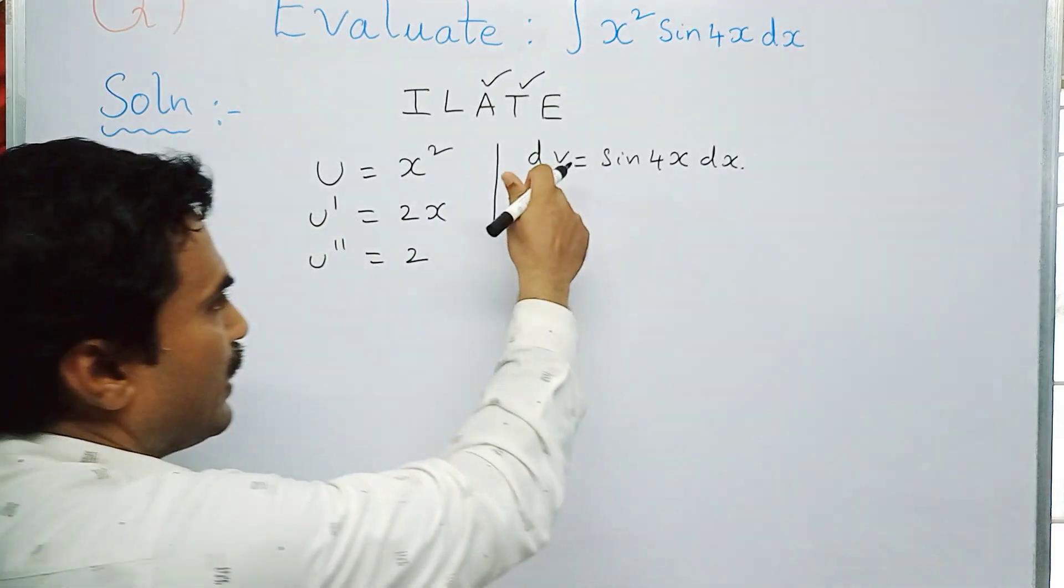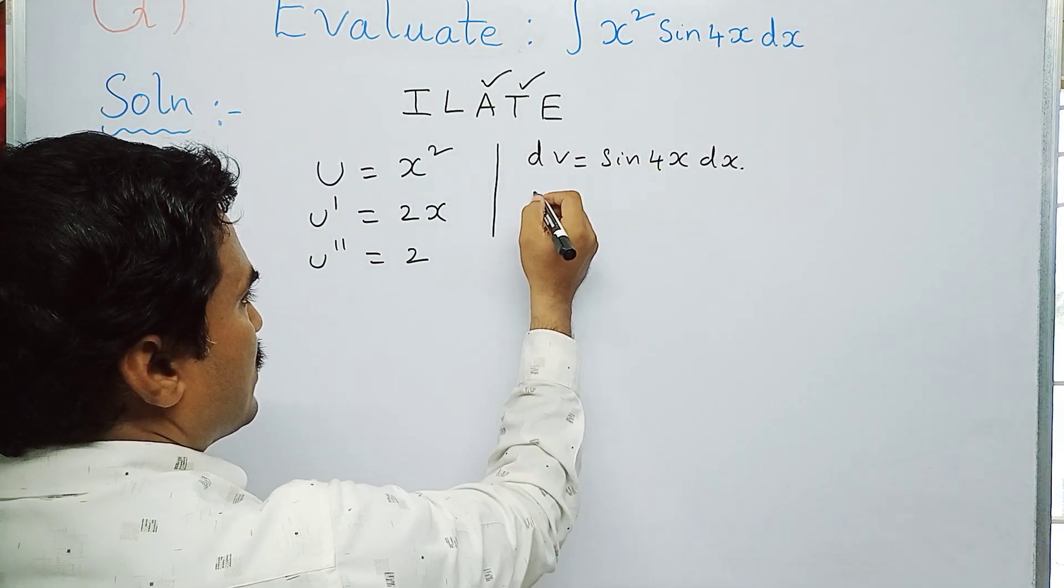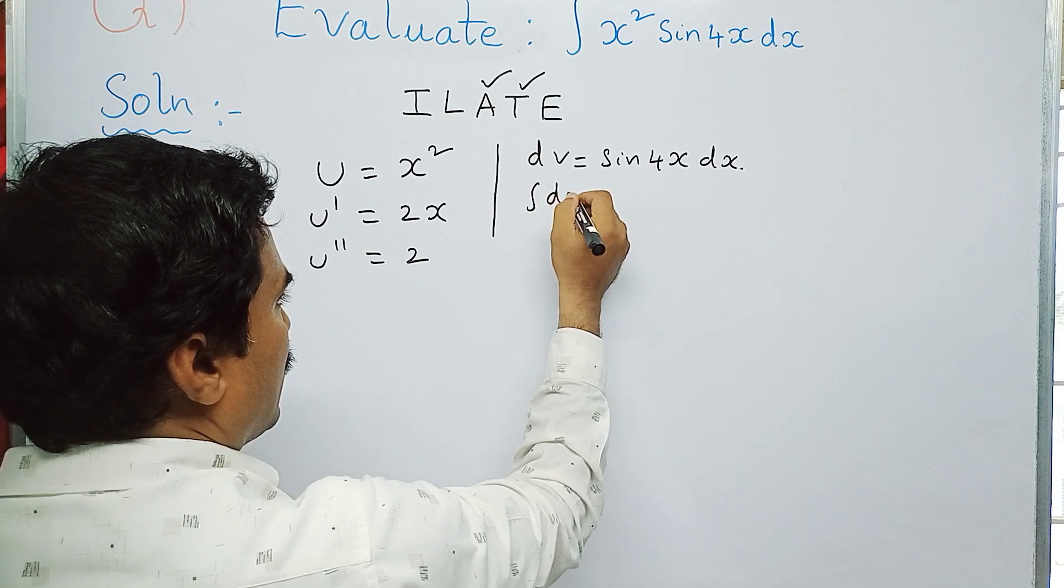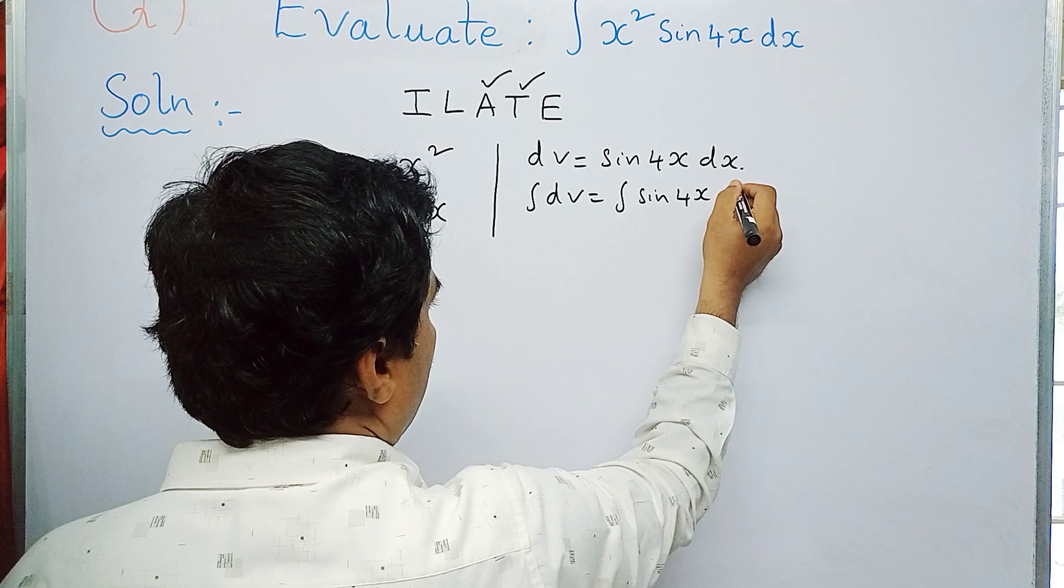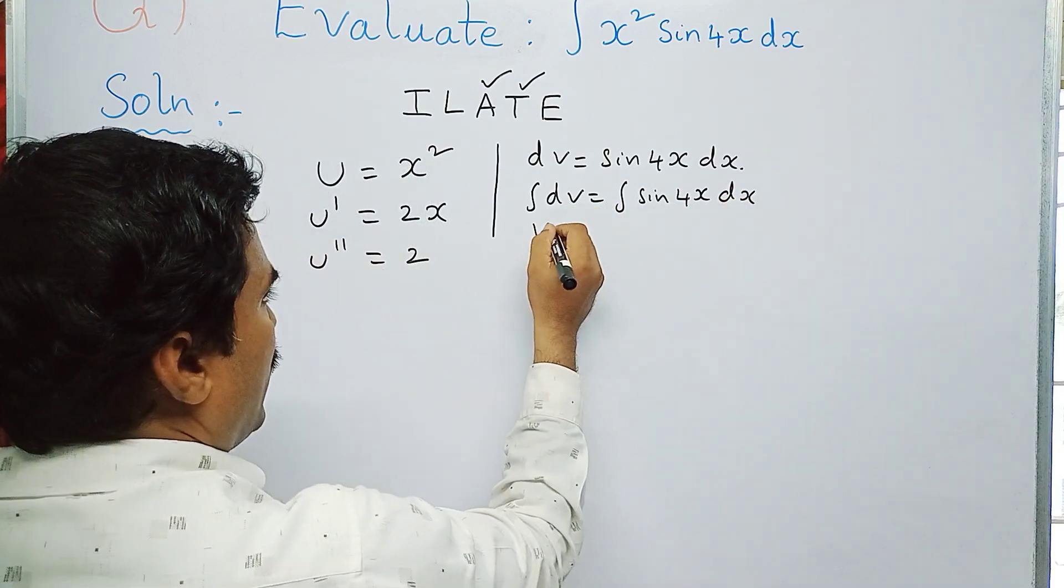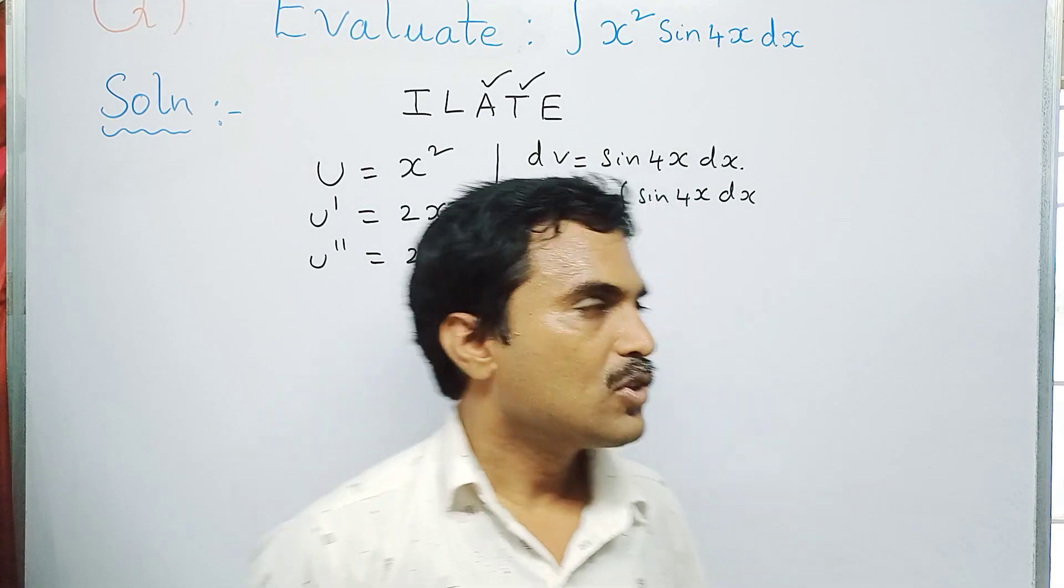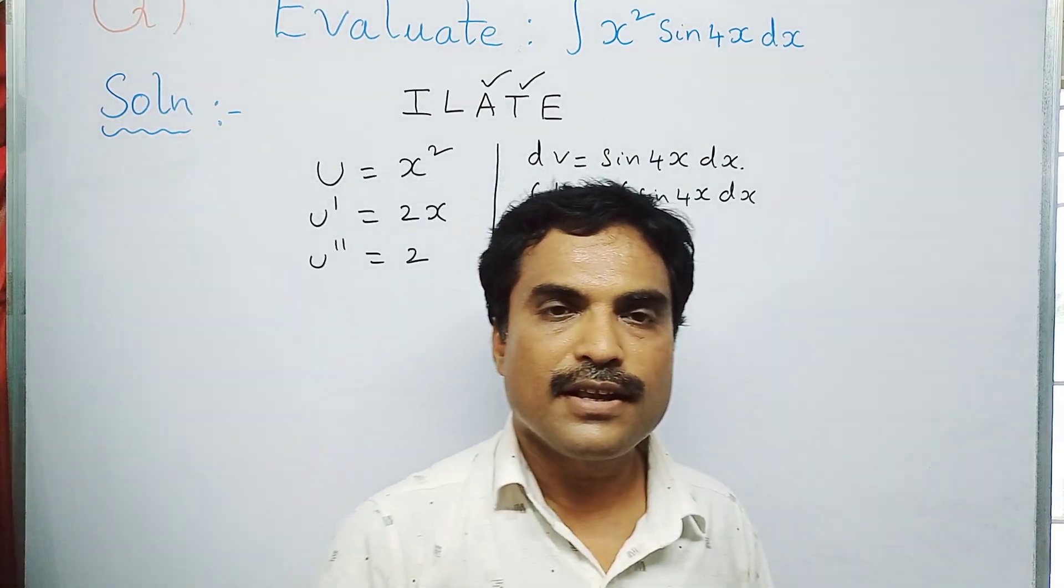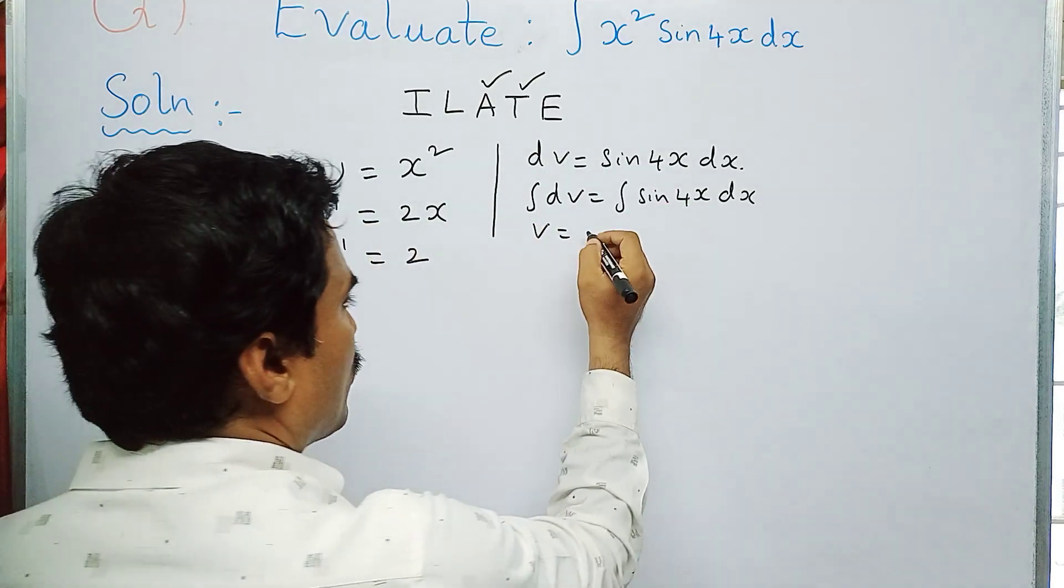Now here, right hand side, we integrate on both sides and we have to integrate this up to the value of v2. So first we integrate on both sides. We will get v, that is integral dv equal to integral sine 4x dx. So this will become v. Now for this, integral sine ax dx formula should be used here. So what is integral sine ax dx? That is minus 1 by a cos ax.